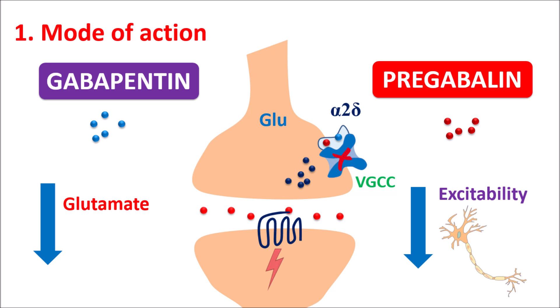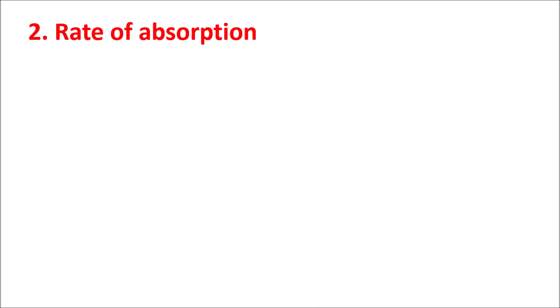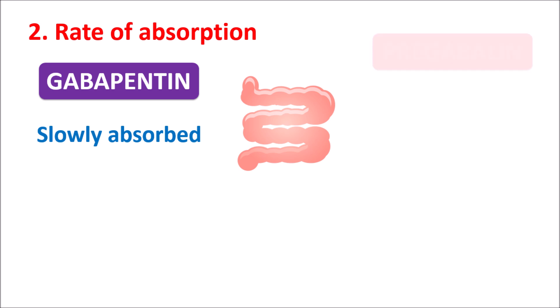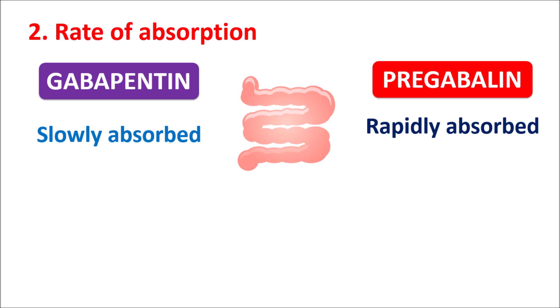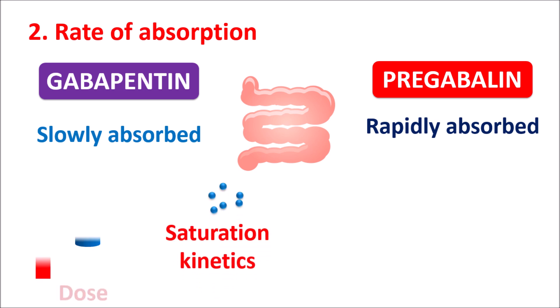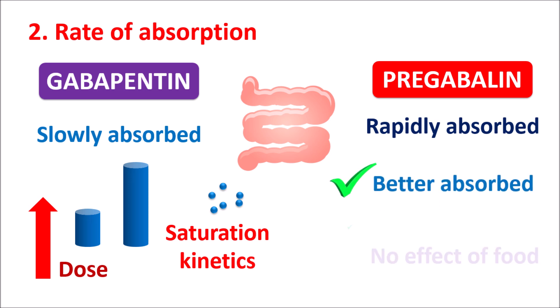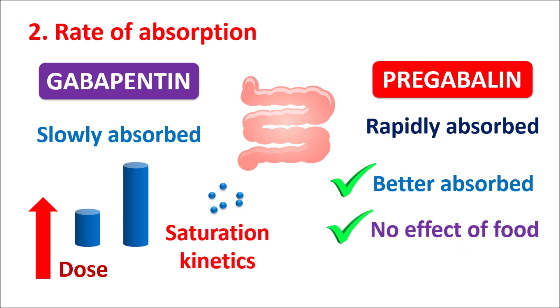Even though the term GABA appears in their names, these drugs do not affect GABA transmission directly. The second point is rate of absorption, where Gabapentin and Pregabalin differ. Gabapentin is slowly absorbed through the small intestine, whereas Pregabalin is rapidly absorbed. Gabapentin shows saturation kinetics — when the dose is increased, the rate of absorption is not proportionally increased, because Gabapentin is absorbed by a carrier-mediated mechanism, and when all carriers are saturated, absorption is reduced. On the other hand, Pregabalin is better absorbed, its absorption is not affected by food, and it does not show saturation kinetics — giving Pregabalin an advantage.